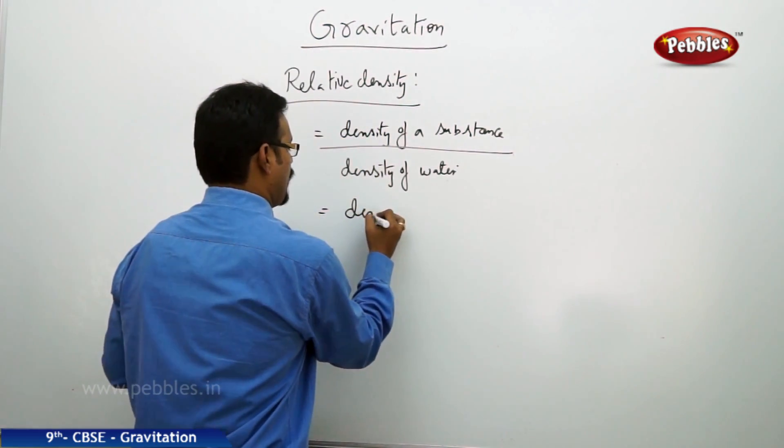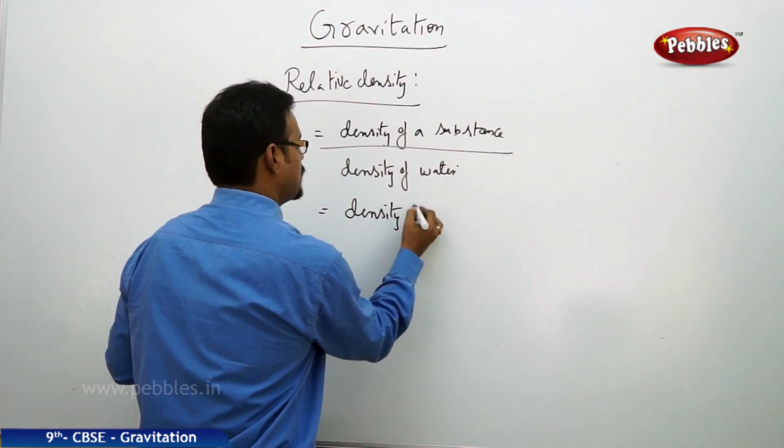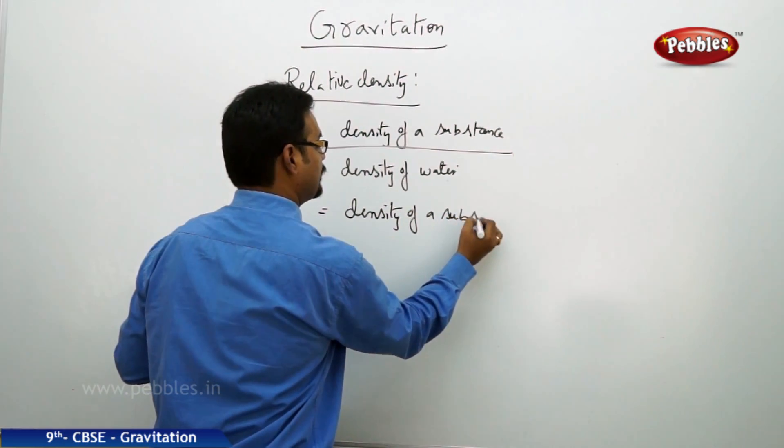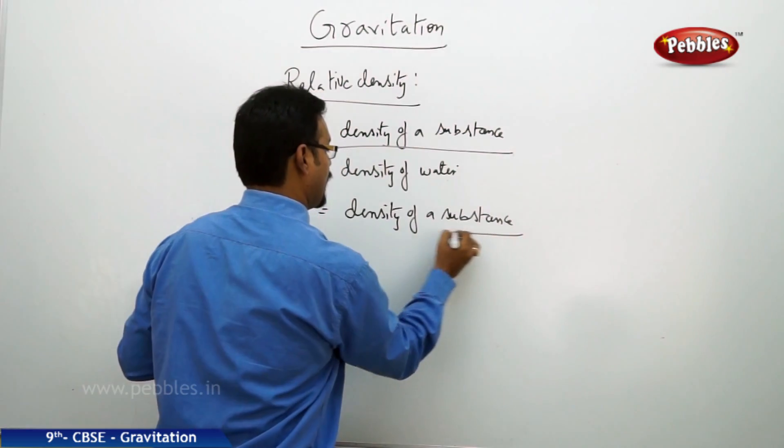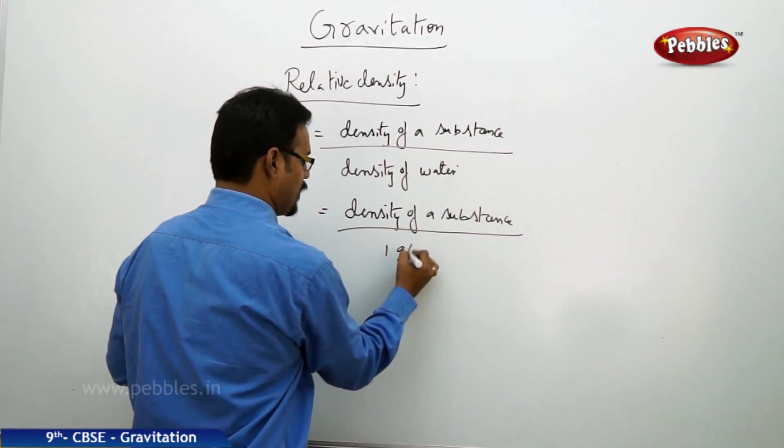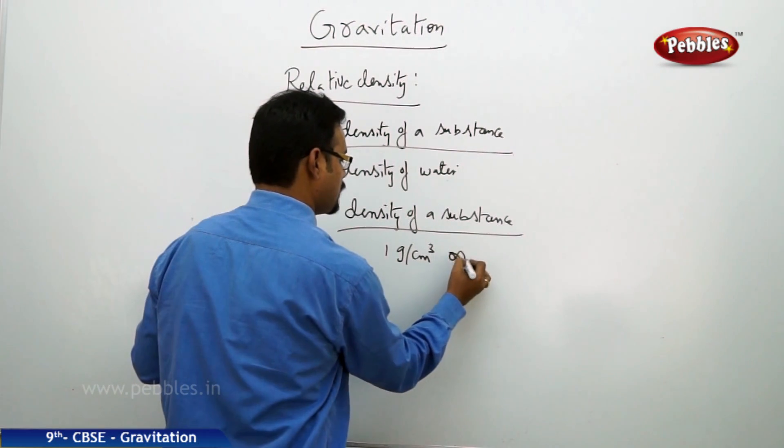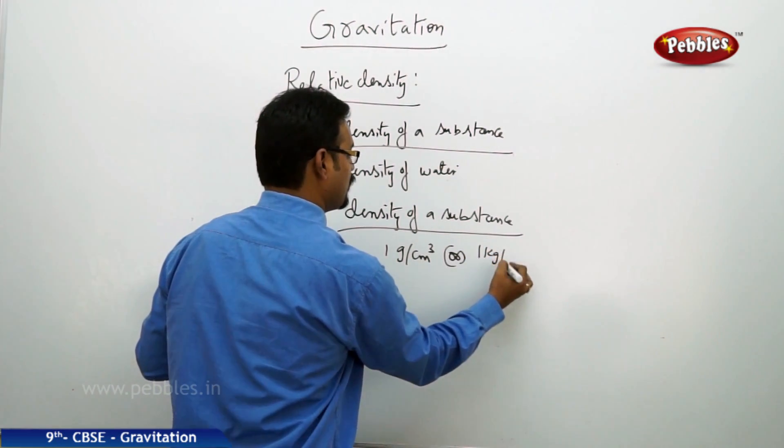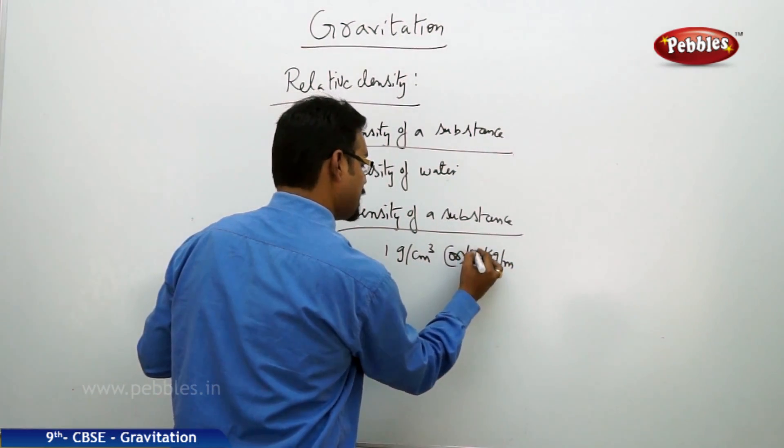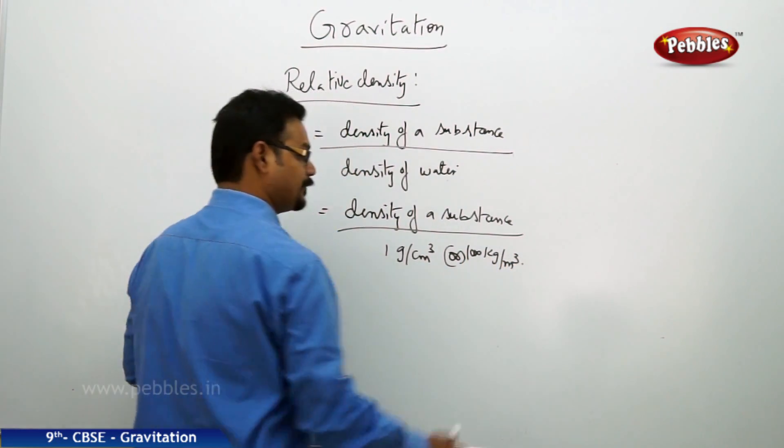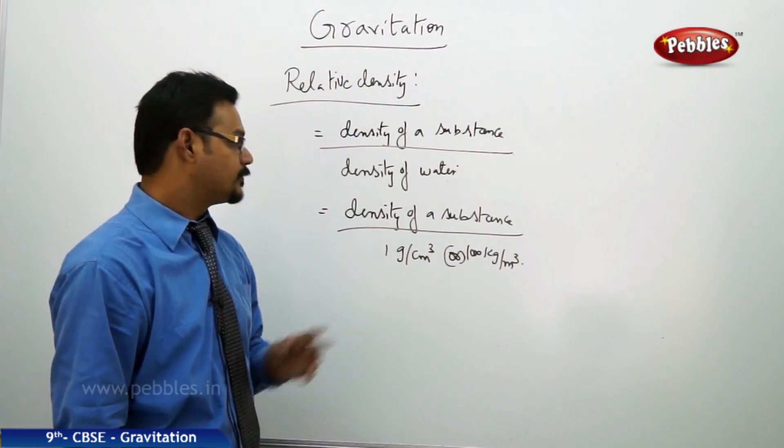So I can say this formula can also be changed to density of a substance by density of water, which is 1 gram per centimeter cube, or density of substance by 1000 kg per meter cube, like this.